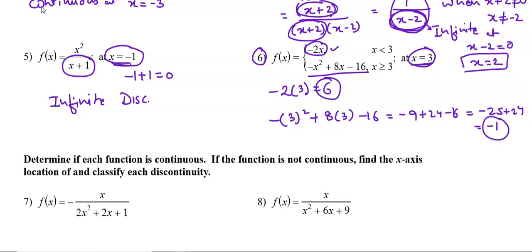We get -25 + 24 = -1. This value (-1) and the first value (6) are not the same, so it is discontinuous. This is the third kind of discontinuity, called jump discontinuity. At x = 3, the first part gives y = 6 while the second part gives y = -1, which is why it is called jump discontinuity.